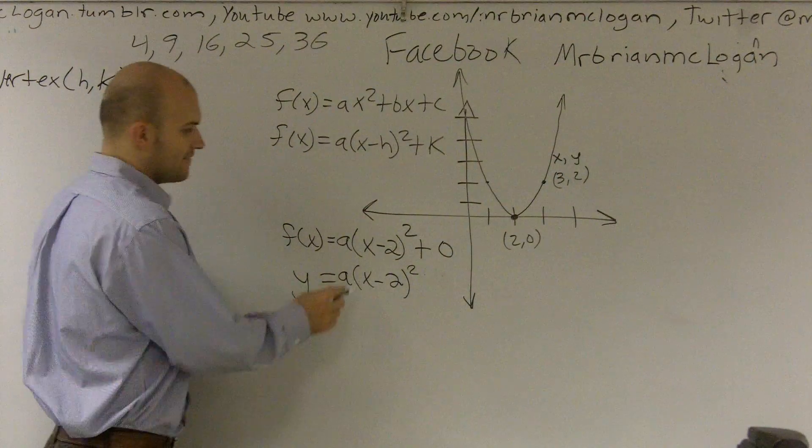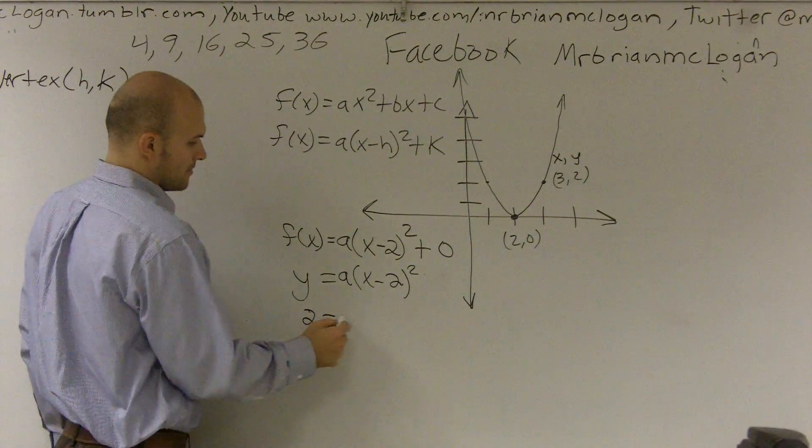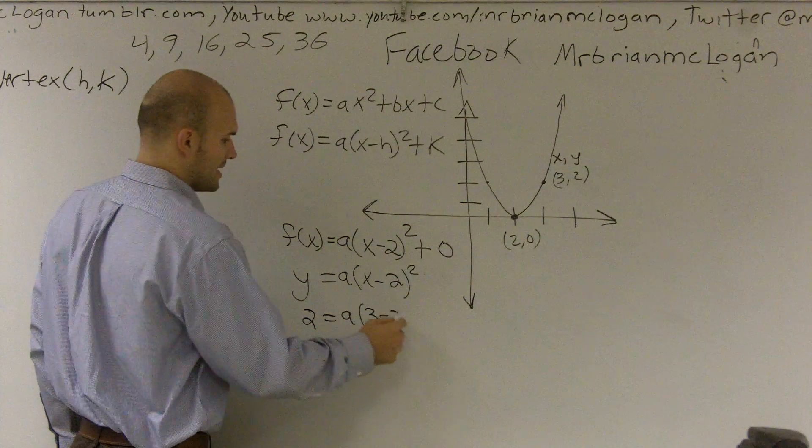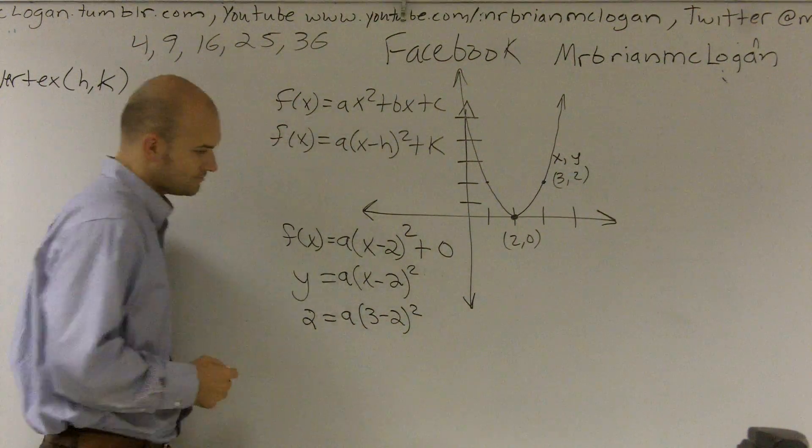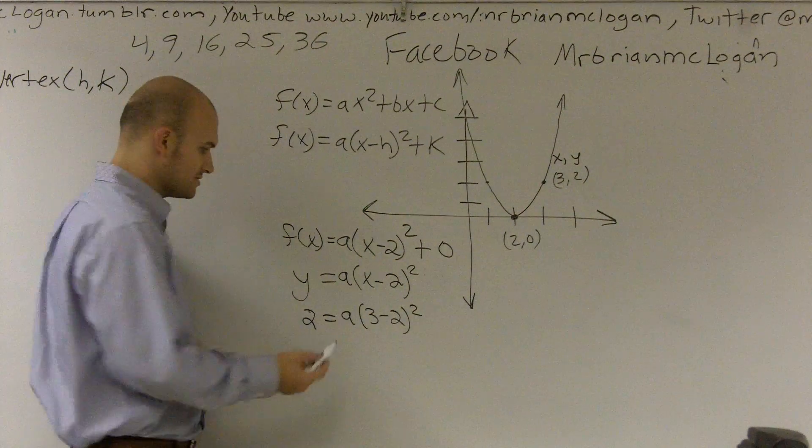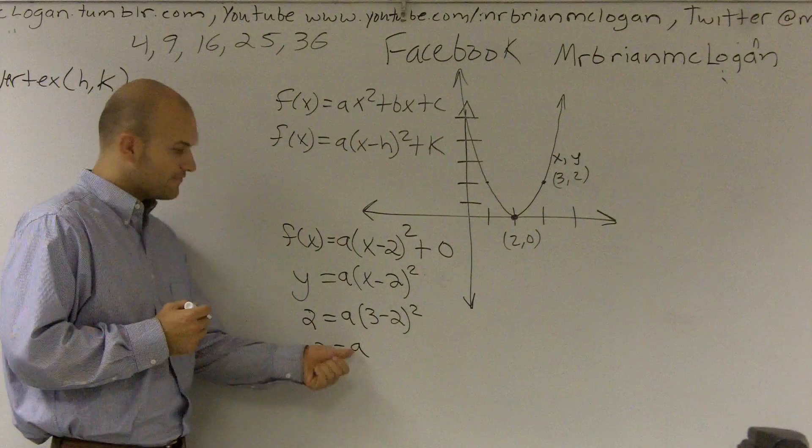Let's just not write this here anymore. So if I have an x and a y coordinate, which I do, 3 and 2, and then this is 3 minus 2 squared. And so, 3 minus 2 is going to be 1. 1 squared is 1. So, I have 2 is equal to a.